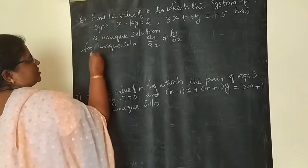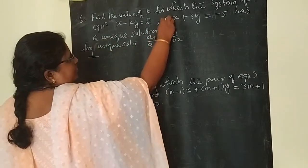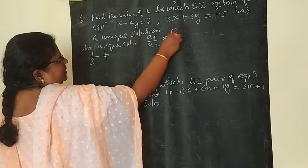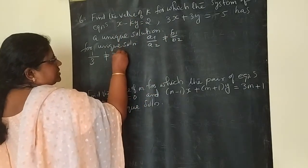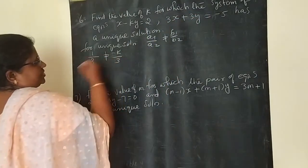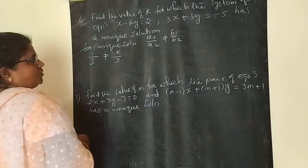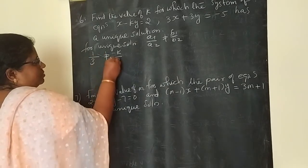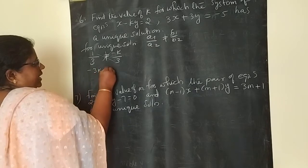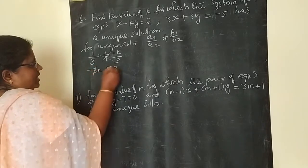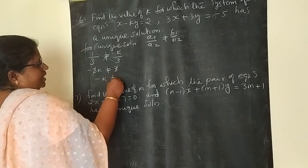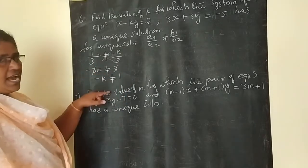A1 is the coefficient of X in the first equation, which is 1. A2 is the coefficient of X in the second equation, which is 3. So 1 by 3 not equal to B1 by B2, where B1 is minus K and B2 is 3. Cross multiplying gives minus 3K not equal to 3, and we can cancel the 3s.